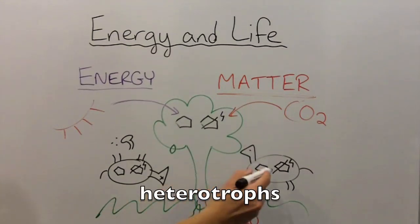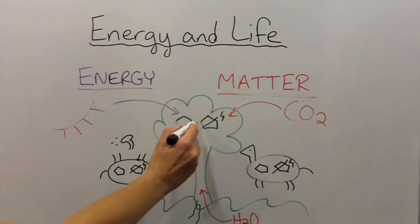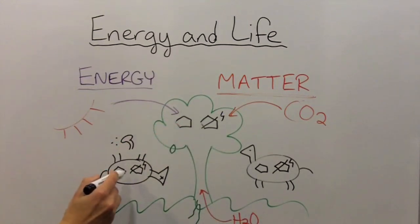Heterotrophs include consumers, which get food from living things, as well as decomposers, which get food from dead things. Both consumers and decomposers most commonly use the process of respiration to break apart food molecules and get the energy that is stored inside.